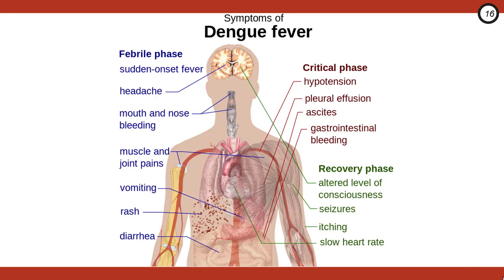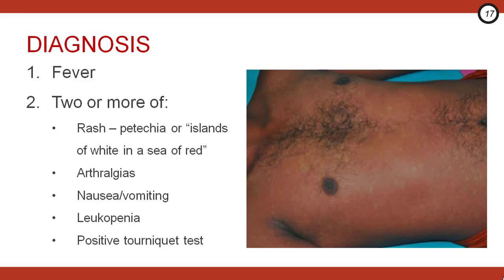While dengue is often thought to be a bimodal saddleback fever, only some patients get this. To make the diagnosis of dengue, you need two things: one, fever, and two, two or more of the following. Rash, commonly seen as either petechiae or islands of white in a sea of red. Arthralgias, sometimes so severe and debilitating that dengue is also known as breakbone fever. You can also get nausea, vomiting, leukopenia, or a positive tourniquet test, where distal petechiae can appear after deflating a blood pressure cuff that's been left inflated for five minutes.